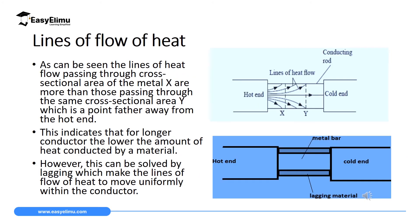How does lagging reduce heat loss? Look at the first diagram on the screen. We have a material set between the hot end and the cold end. Close to the hot end, we have very many lines of heat flow — seven lines in total. Lines of heat flow are the paths followed by heat when it's flowing in a conductor. As you move between x and y, the lines of heat flow are reducing from seven to five. When you move beyond point c, we only have one line of heat flow. So as you move from the hot end to the cold end, the lines of heat flow are diverging and heat is escaping through the surface of the conductor to the environment.